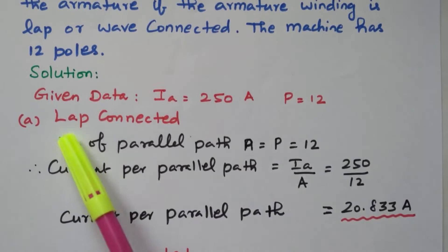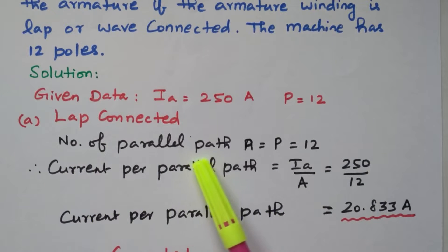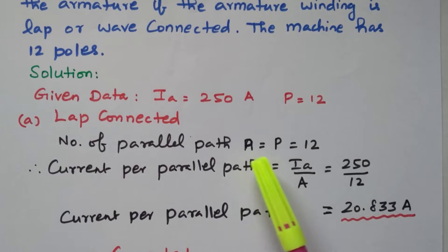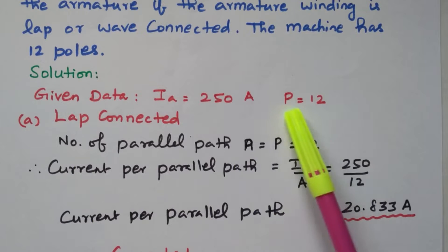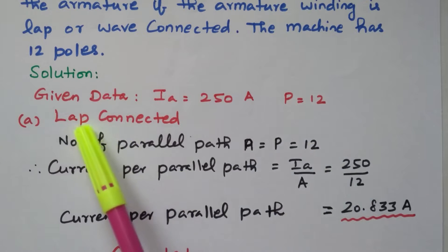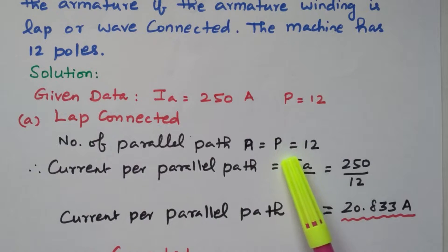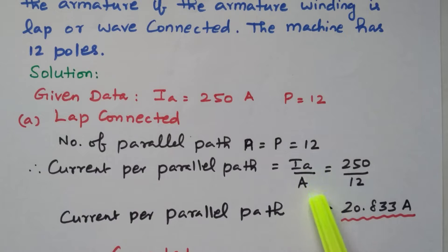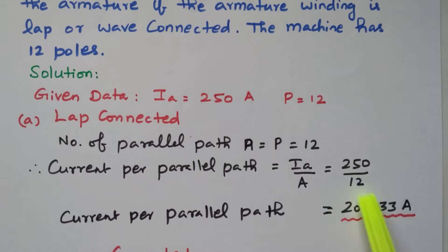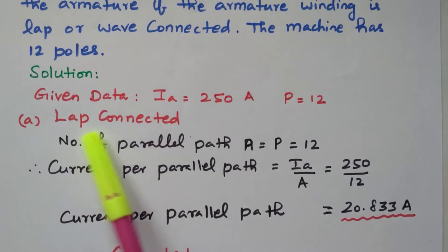For lap connected, the number of parallel paths A equals the number of poles, so A equals 12. Current per parallel path equals Ia divided by A, which is 250 divided by 12, giving 20.833 amperes. So the current per path equals 20.833 amperes for a lap connected armature.